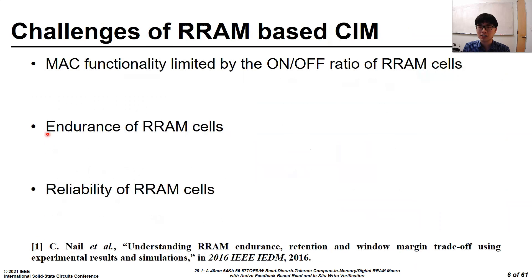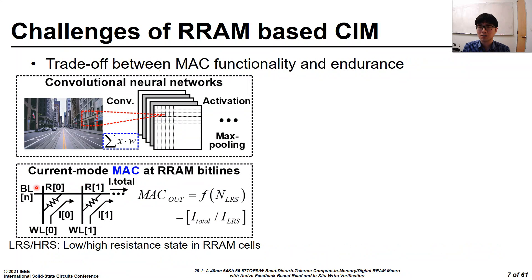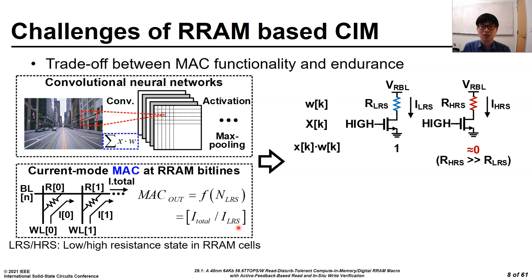However, there are some obstacles in RRAM-based CIM architectures, such as MAC functionality over the on-off ratio, and the endurance and reliability of RRAM cells. This slide shows the MAC operations with an RRAM array. To support neural networks in RRAM-based CIM architectures, the current sensing MAC is generally used in an RRAM array. The RRAM is encoded in a low and high resistance state to represent weights in the current sensing MAC. The output of the current sensing MAC is determined by the ratio of the total current to the LRS current.